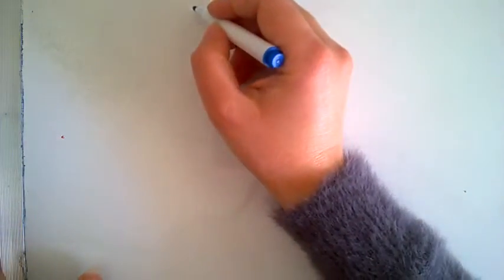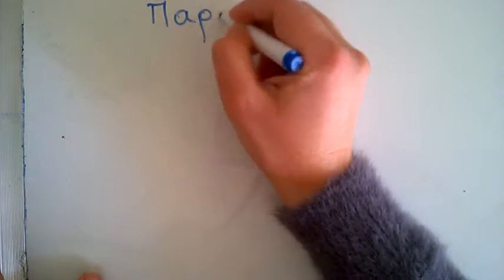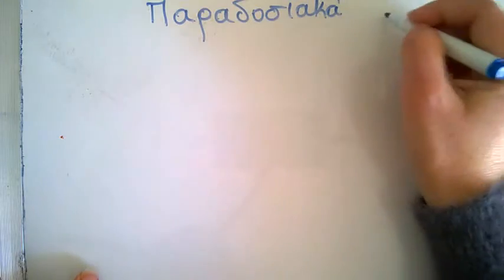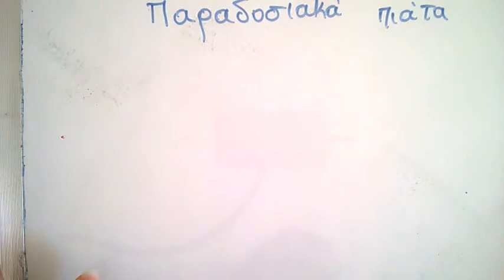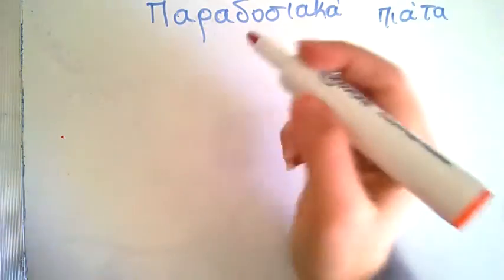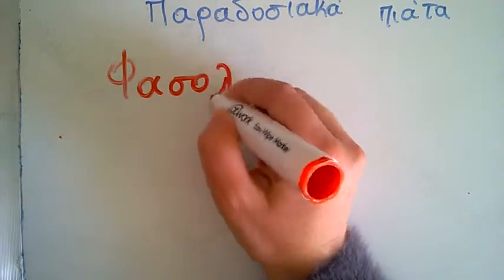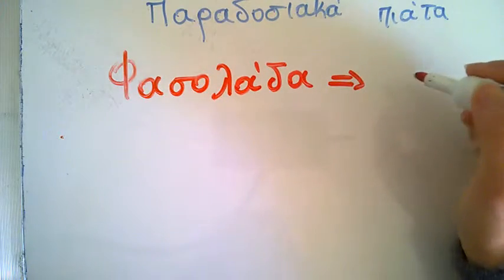Hello and welcome to our channel. In this session we are going to see some traditional food, traditional dishes. A traditional dish in Greece is fasolada, which is made with beans, fasolada with beans.